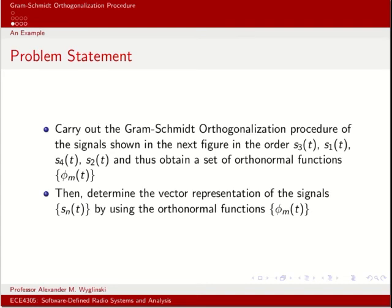Let's perform an example of Gram-Schmidt orthogonalization. Remember, order is important in Gram-Schmidt orthogonalization. Suppose we have four signal waveforms. What are the orthonormal basis functions phi_m of t if we perform Gram-Schmidt on S_3 of t, S_1 of t, S_4 of t, S_2 of t, in that order? And from that, what is the corresponding vector representation?